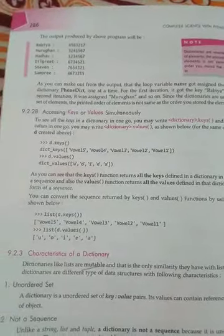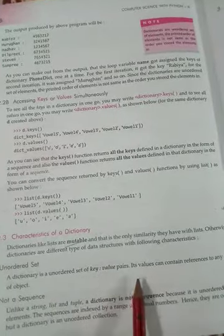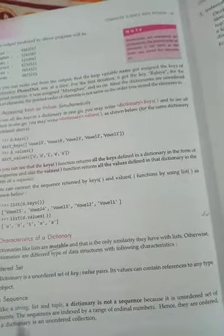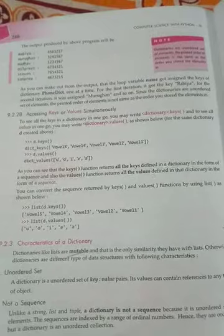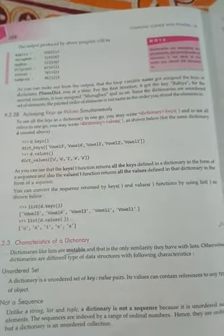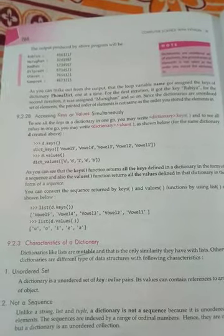The first characteristic is that a dictionary is an unordered set of key-value pairs. Its value can contain references to any type of object. So basically, a dictionary is an unordered set of value pairs, and the value can contain different types of objects, meaning we can store different types of data as a value of a particular dictionary.